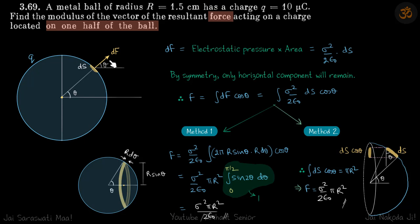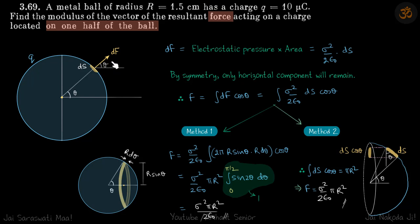Why does the force exist? Because on each element there is an electric field generated by the rest of the sphere, which is going to push that element outward. So every element will experience a small outward force, and we are going to integrate that. Why only half the ball? Because if you take the full ball, the net force is zero. So let's calculate the force on the hemisphere.